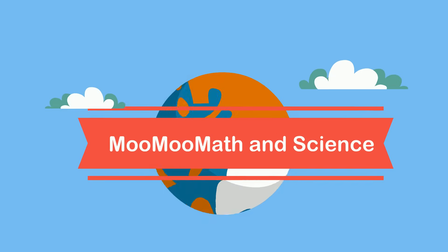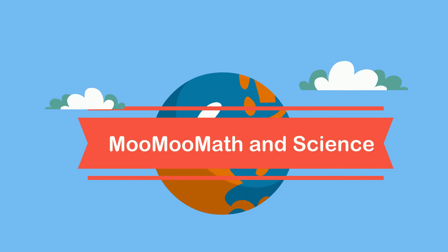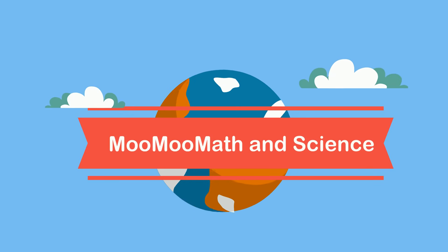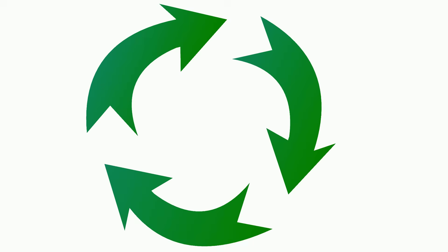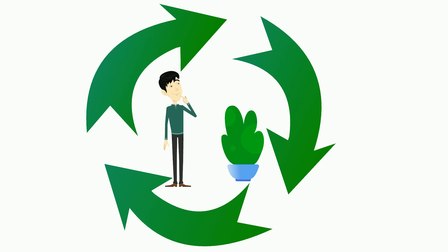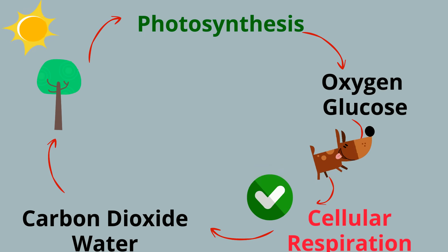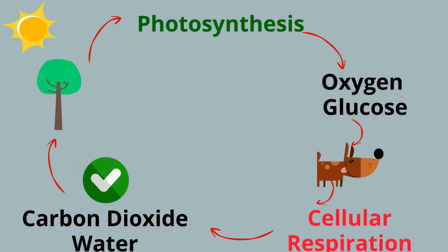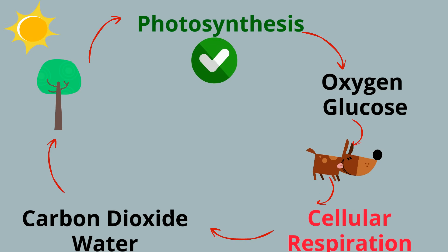Welcome to Moomoo Math & Science and the relationship between photosynthesis and cellular respiration. Photosynthesis and cellular respiration have a similar relationship. The waste product of photosynthesis is used in cellular respiration, and the waste product of cellular respiration is used for fuel in photosynthesis.